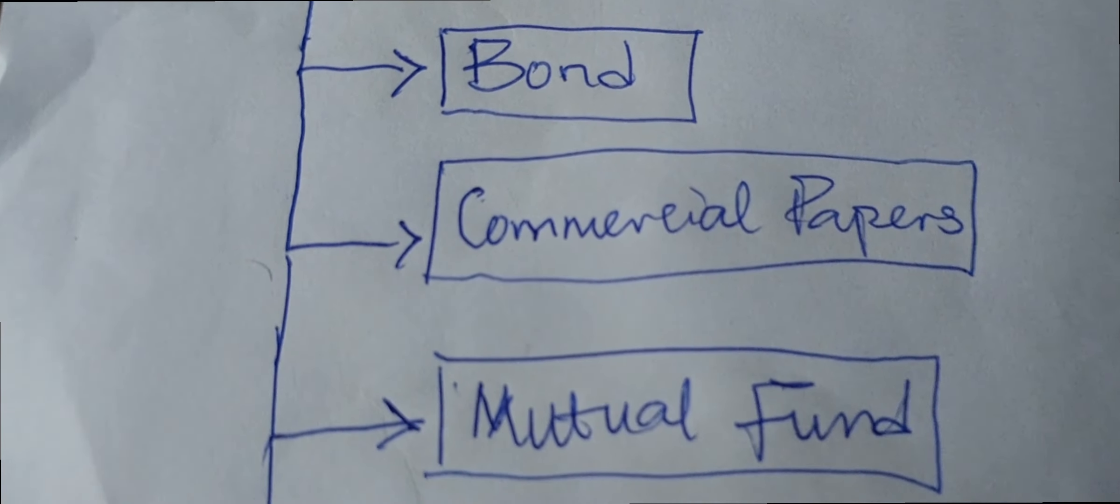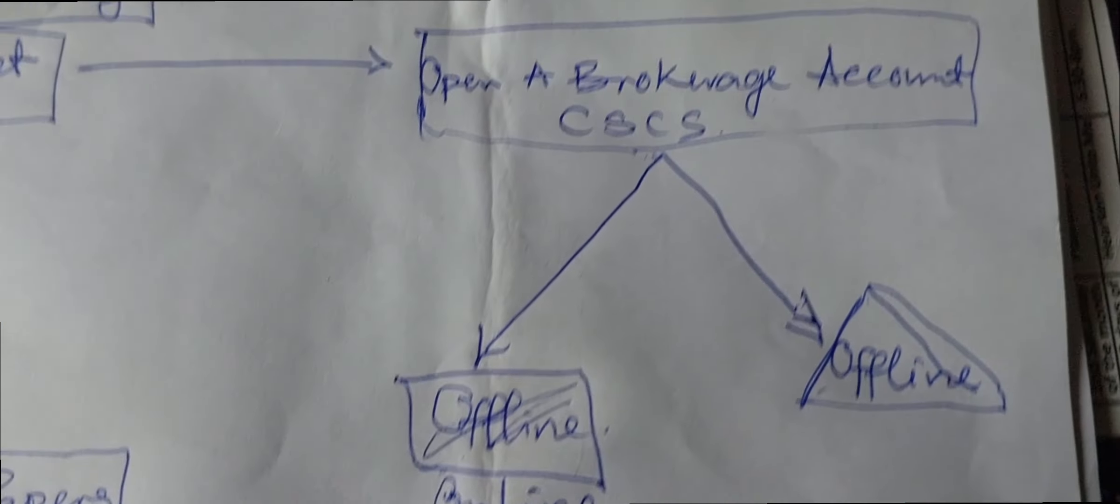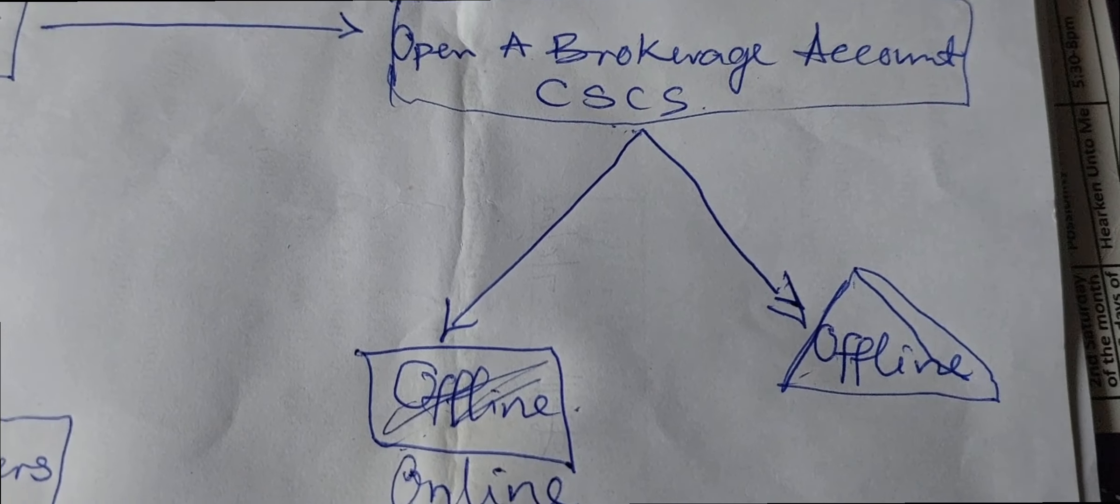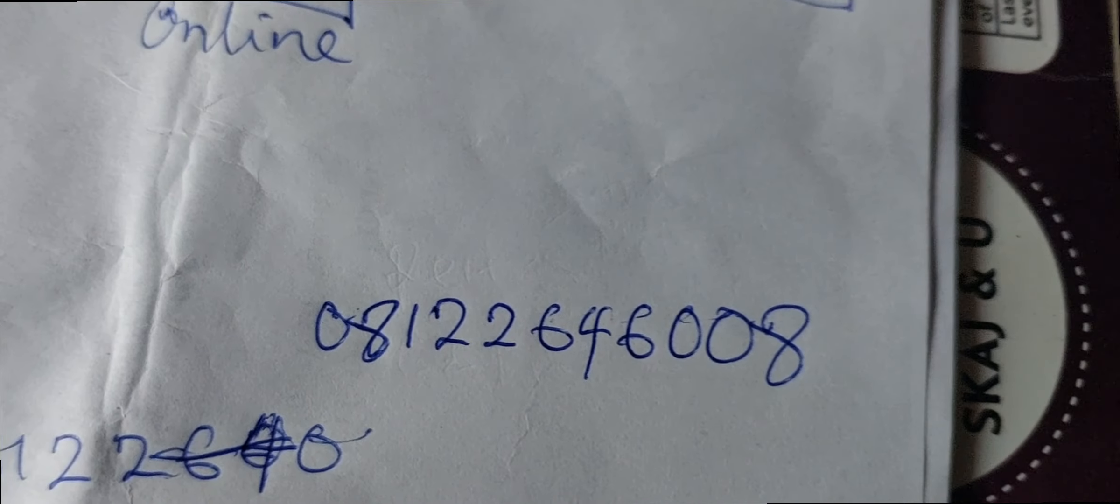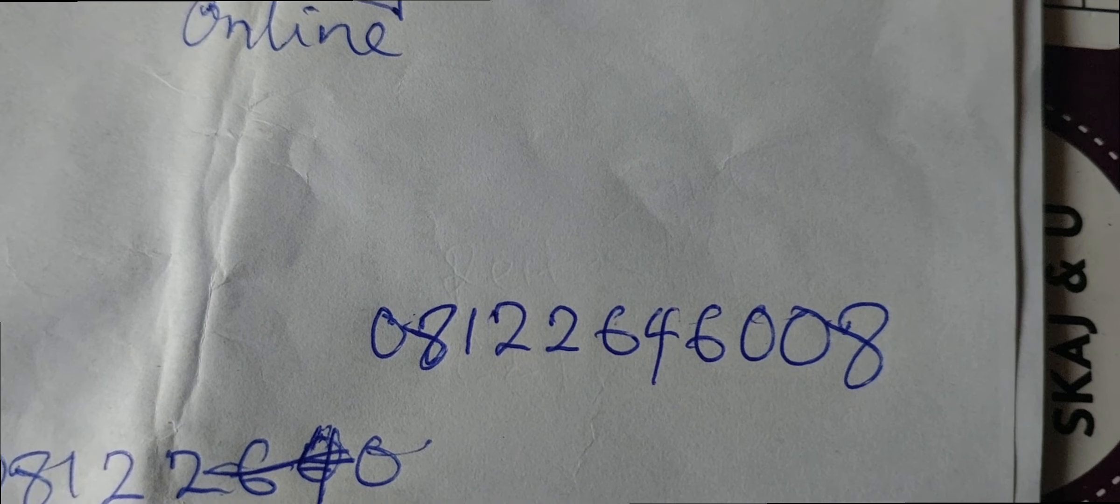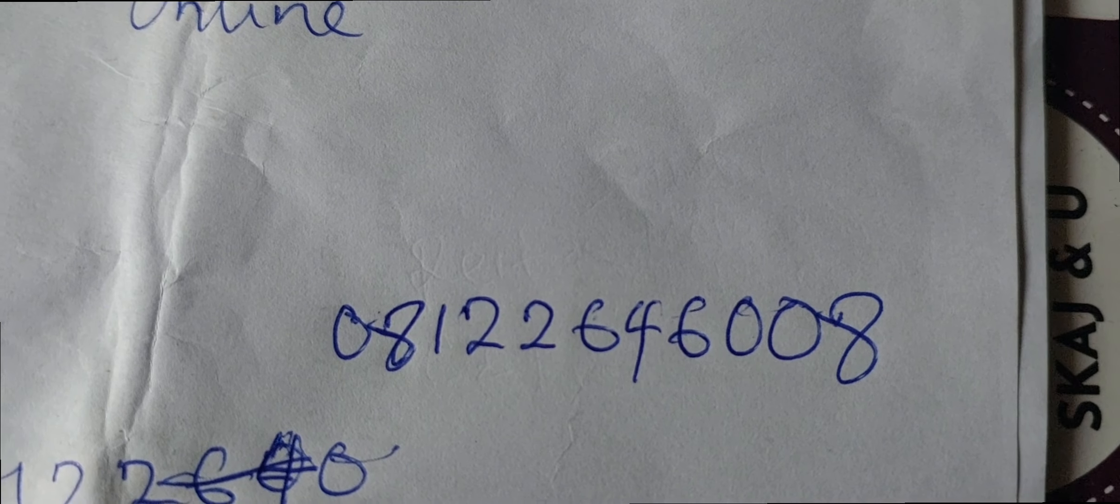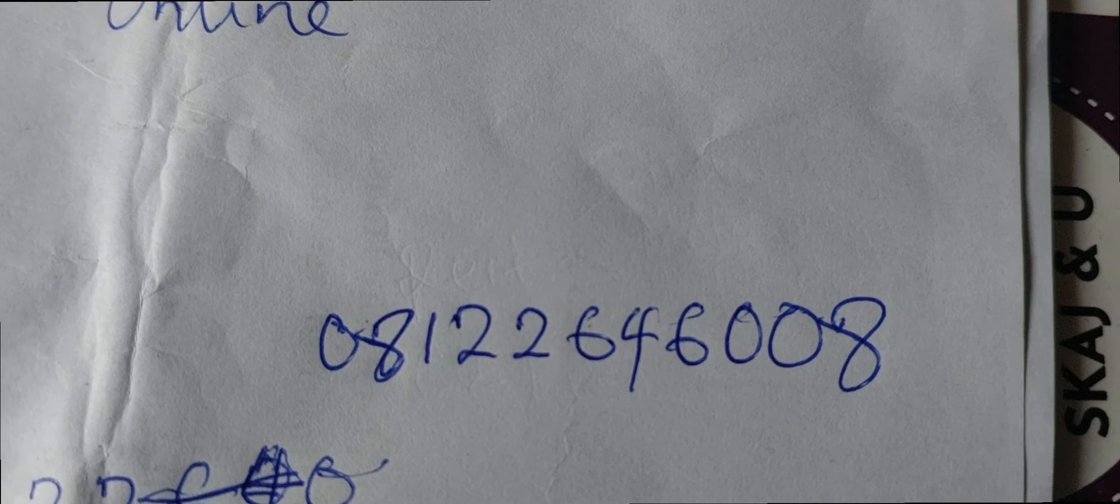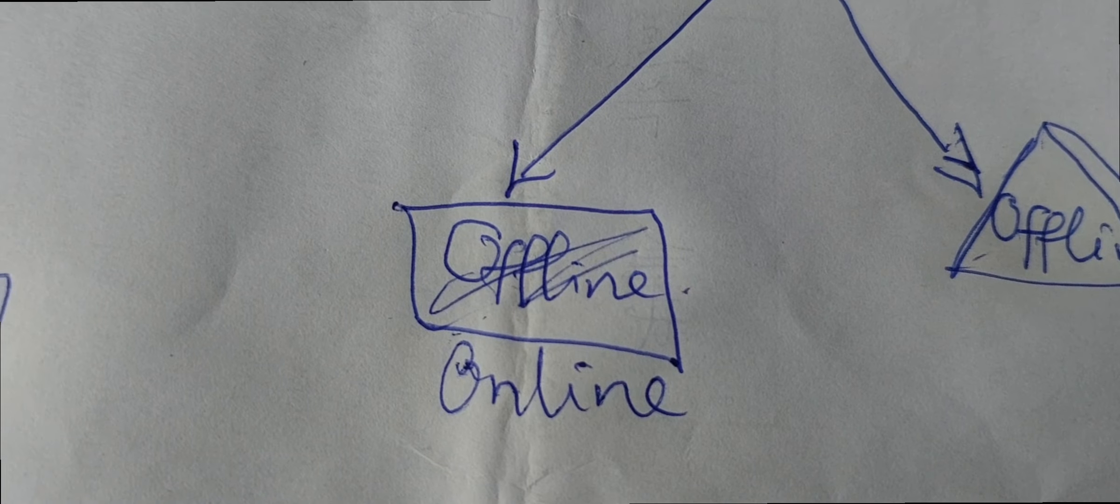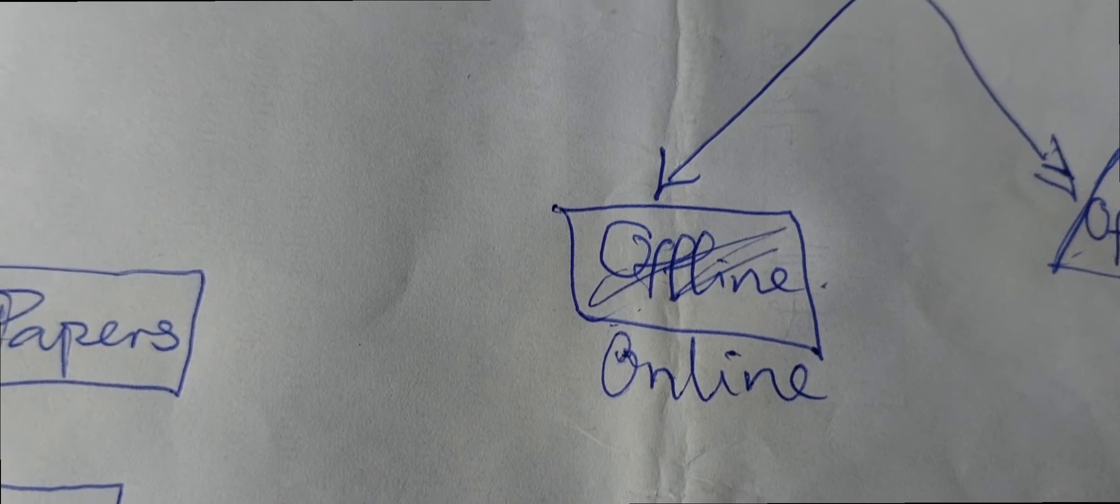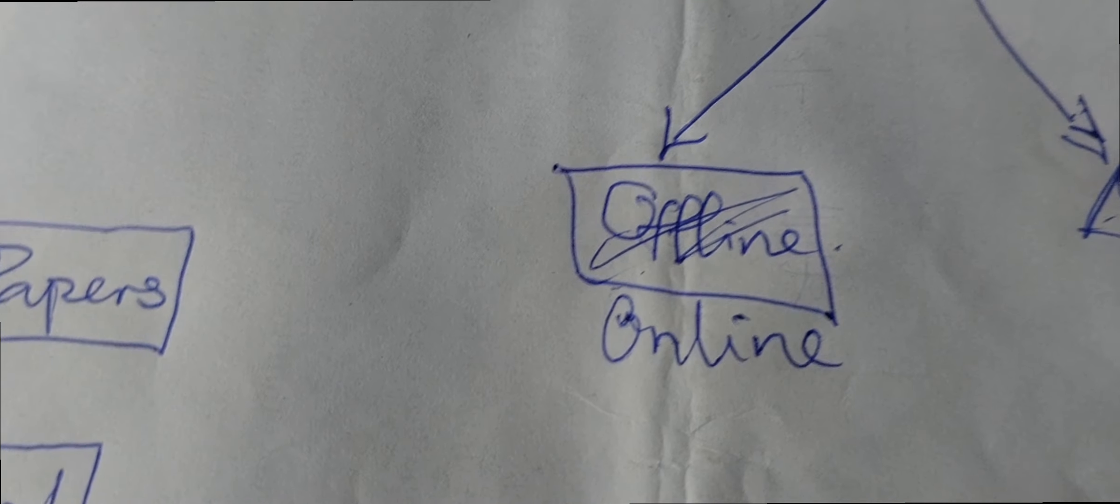There are other things that you can buy on the floor of the Nigerian stock market. Now for those of you who would like to open either your brokerage account, your CSCS, either you want to do the offline or the online, send me a WhatsApp message on this line. Just send 'shares' to 081-22-64-6008. That's a WhatsApp message. I'll give you a list of those online brokerage that you can open with offline. And the beautiful thing about online is you can also invest in other countries, you can invest in Chinese market, New York Stock Exchange, and other things in between.